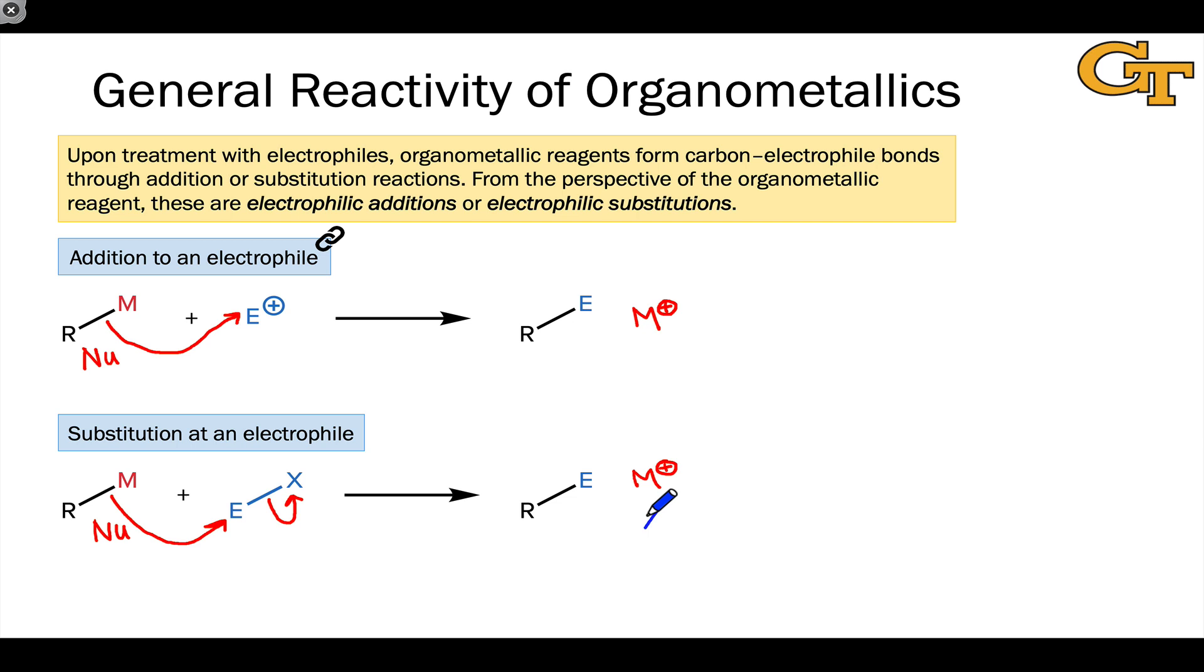We have a similar situation in the second case with M plus being generated as a result of this electron flow. But at the same time, X minus, the conjugate base of the leaving group, is also generated. The first reaction is typical of the addition of organometallic reagents to carbonyl compounds. And the second reaction we've actually already seen is typical of transmetallations or SN2 processes involving carbon electrophiles or other electrophiles with good leaving groups embedded.